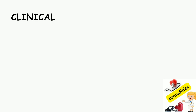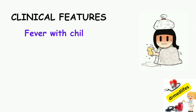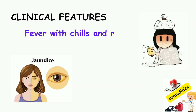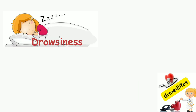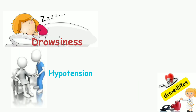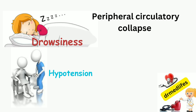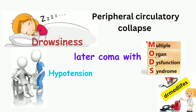Clinical features include fever with chills and rigors, jaundice, oliguria, drowsiness, hypotension, and peripheral circulatory collapse. Later stages may present with coma and multi-organ dysfunction syndrome.